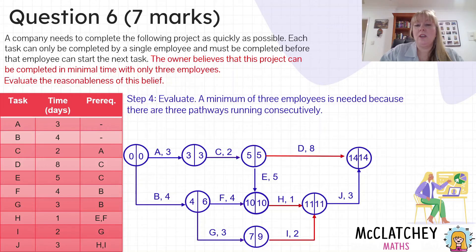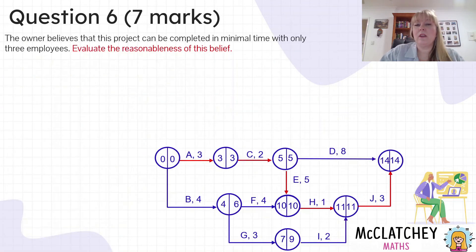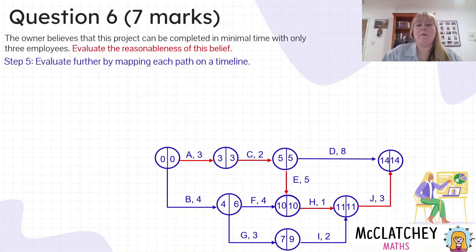We can see that we've got three employees working consecutively across C, F, and G, and also D, H, I, so that we definitely need at least three. It's very tempting though to think that we only need three. We really should map it out just to see if that works. So I'm actually going to map those pathways on a timeline.